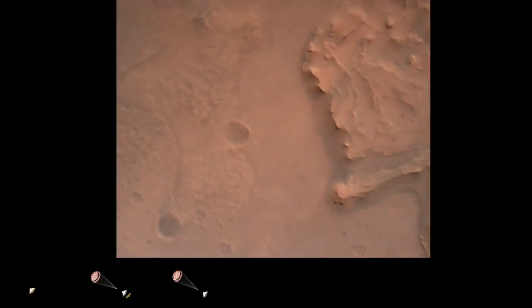Nav filter converged. Velocity solution 3.3 meters per second. Altitude 7.4 kilometers. Now has radar lock on the ground. Current velocity is about 100 meters per second, 6.6 kilometers above the surface.